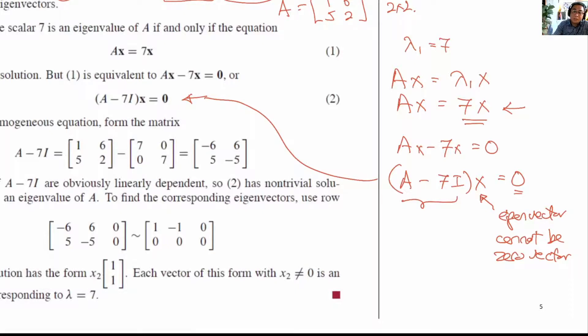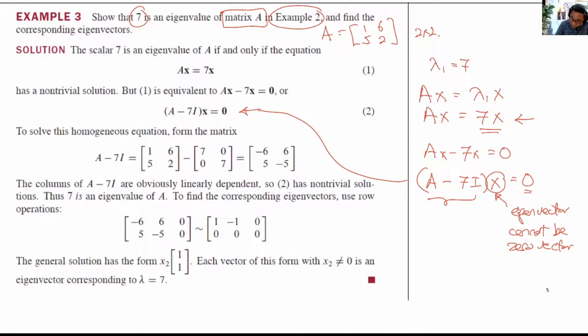So since by definition the eigenvector cannot be the 0 vector, we must find a non-zero vector x such that this equation is true. Now this equation is called a homogeneous equation.